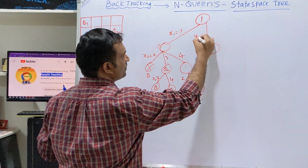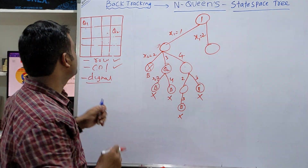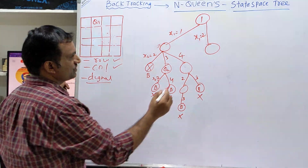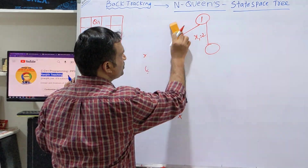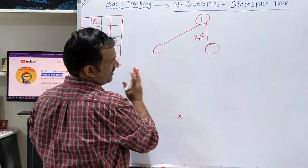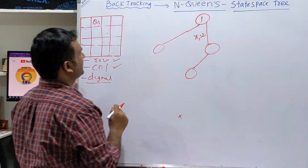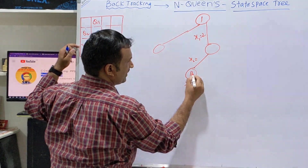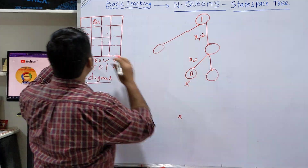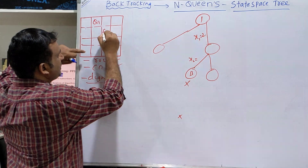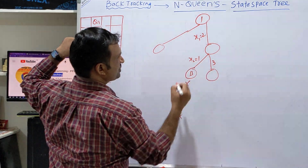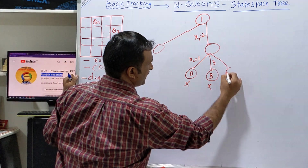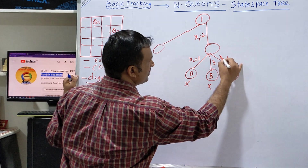Now let's take x1 equal to 2 — you are trying to place queen 1 in the 2nd position. When queen 1 is in the 2nd position, what are the possible ways? Can you place queen 2 here? No. Backtrack. Next — same column, no. Queen 2 in the third position — backtrack, it is on the diagonal. Queen 2 in the fourth position — yes. Queen 2 in the fourth position, done. Now queen 3 — x3 equal to 1, first position — yes, we can place it.